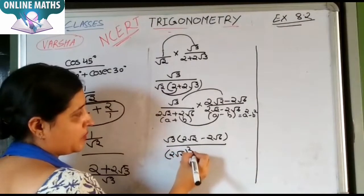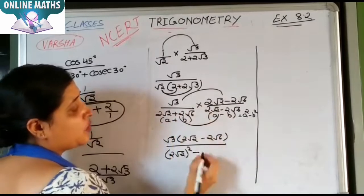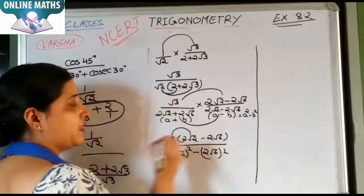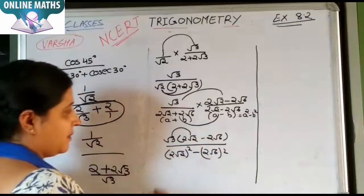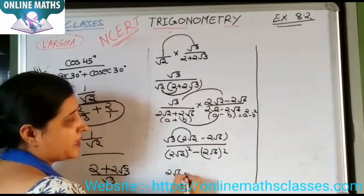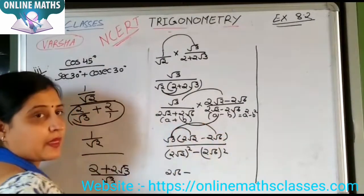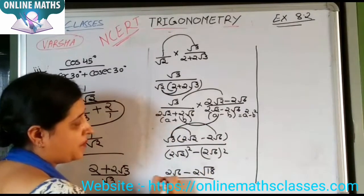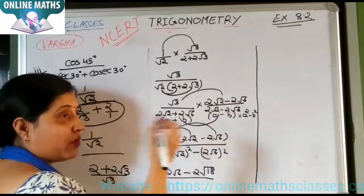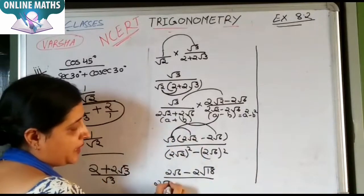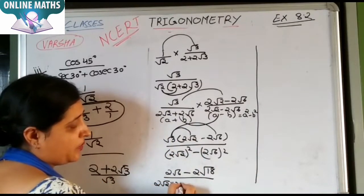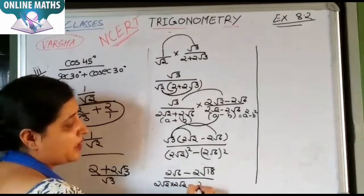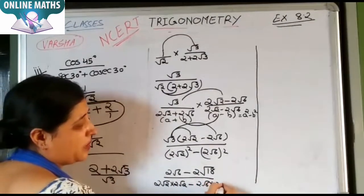The denominator becomes: 2 under root 2 whole square minus 2 under root 6 whole square. Now open the bracket in the numerator: 2 under root 6 minus 2 under root 8. The denominator: 2 under root 2 into 2 under root 2 minus 2 under root 6 into 2 under root 6.